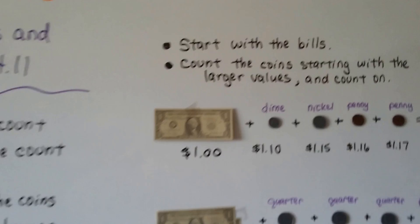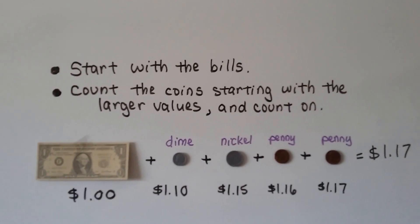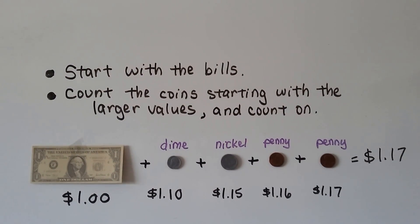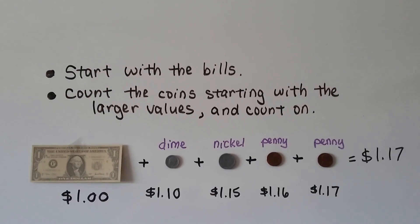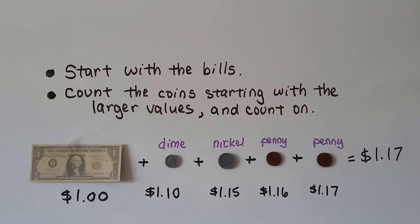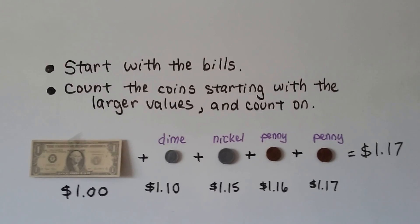We start with the bills and then we count the coins starting with the larger values and count on. So here we have a one dollar bill, a dime, a nickel, a penny, and another penny. We start with the dollar bill.